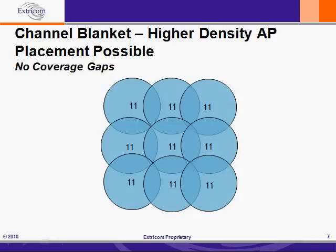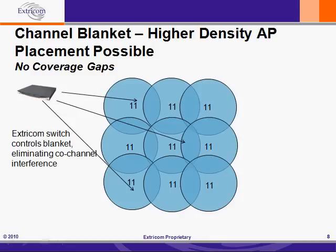With only one channel in a channel blanket, haven't we created one big collision domain? Isn't this what we were trying to avoid? Well, the answer is that with microcell technology, you shouldn't try this, but Extracom's technology is built to run the cells on a single channel and do so exceedingly well. For example, the Extracom wireless LAN switch, in stark contrast to microcell controllers, is able to carefully control the channel blanket in order to eliminate co-channel interference between the APs.